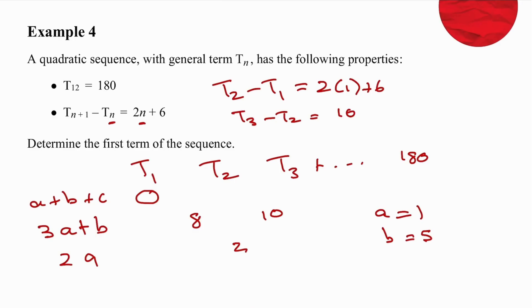We can work out this term value is T12. So, if we use 12 into the quadratic formula TN equals AN squared plus BN plus C, we are going to substitute A equal to 1, and at the same time, we are going to substitute N equal to 12. So, we are going to have 12 squared is 144 times 1. Then, we are going to substitute B equal to 5 and N equal to 12 to get 60. We are going to add C, and that answer has to be 180. So, C is going to equal minus 24.